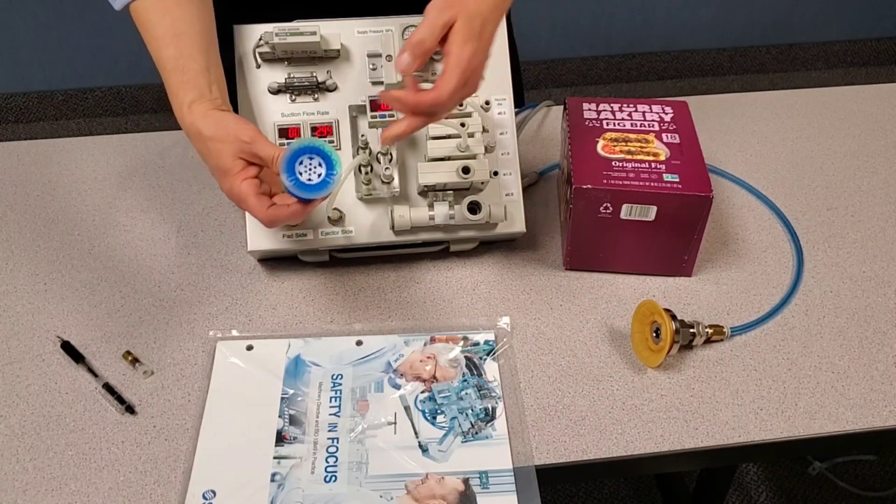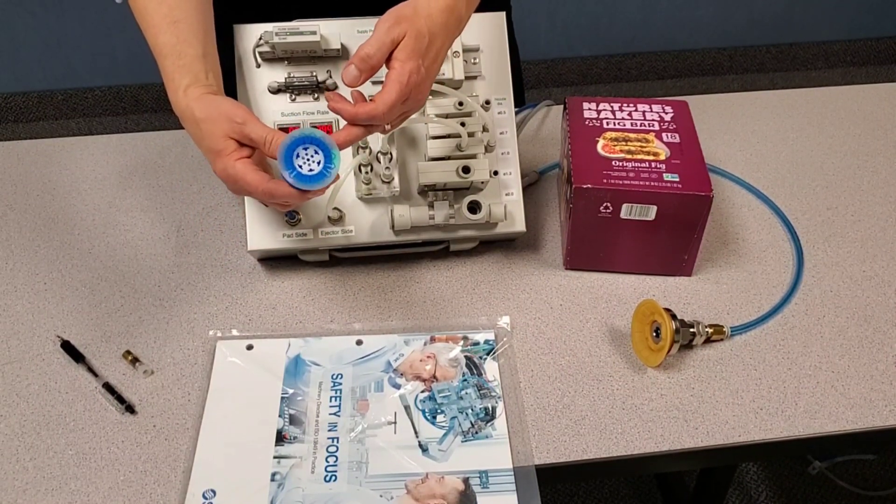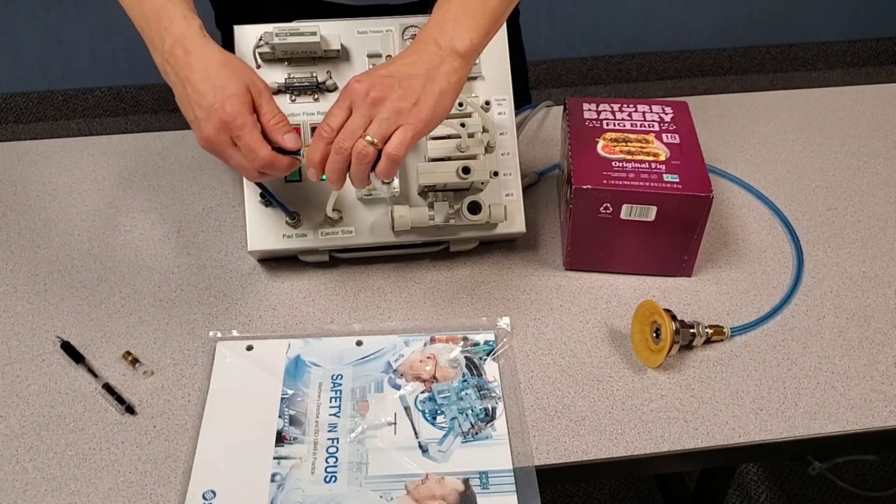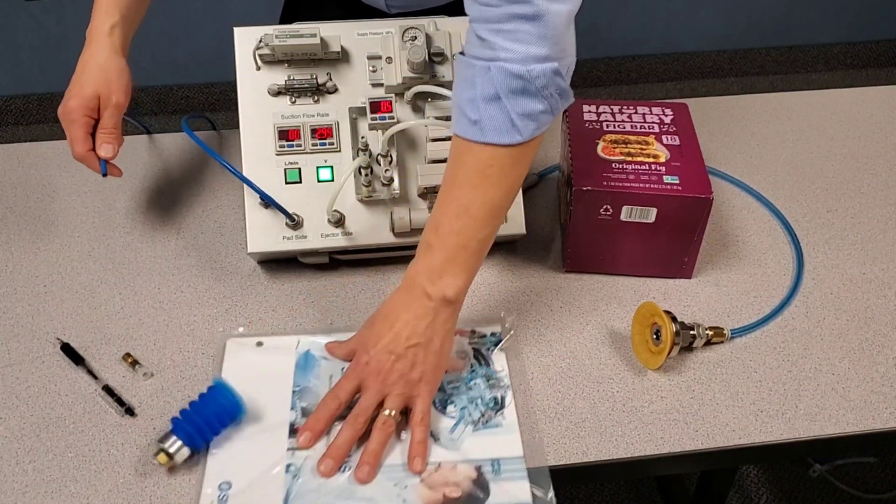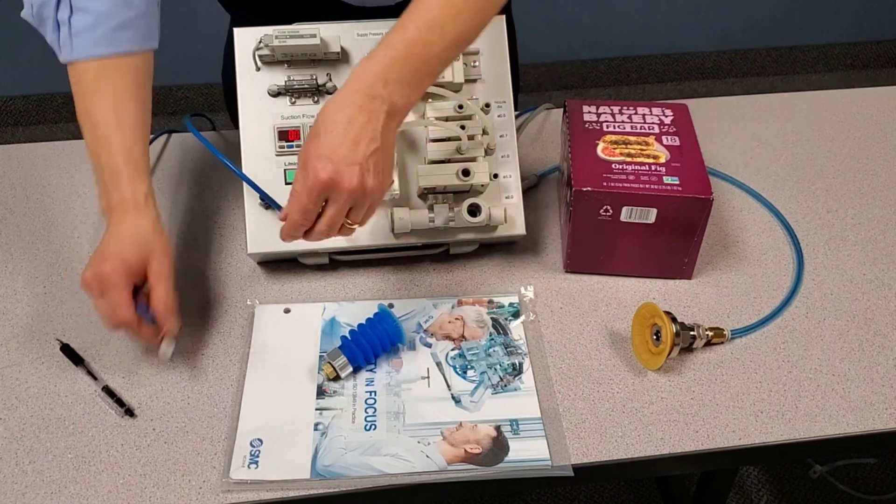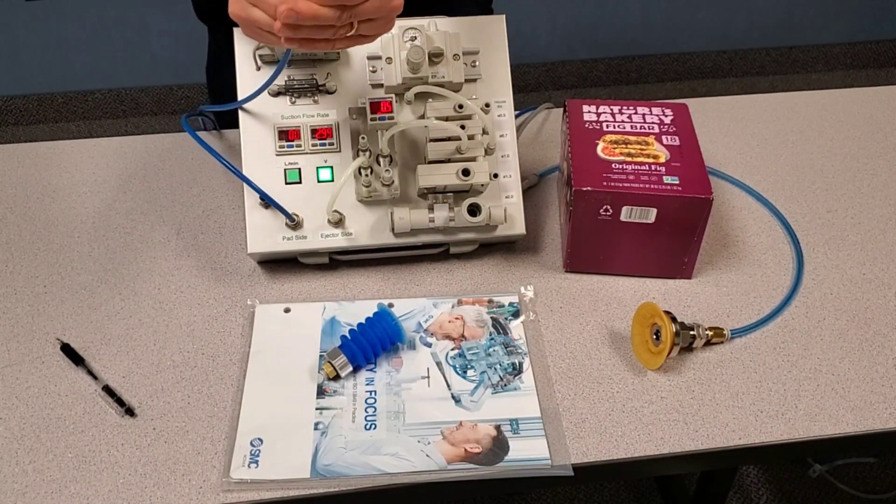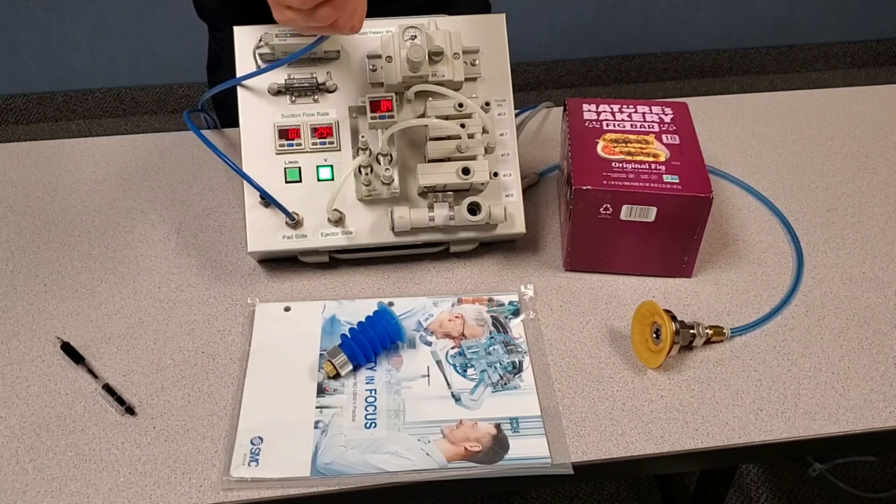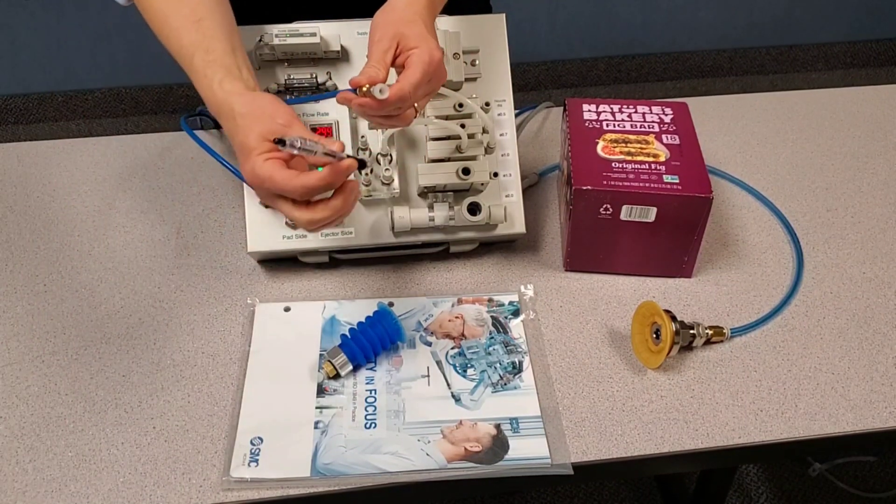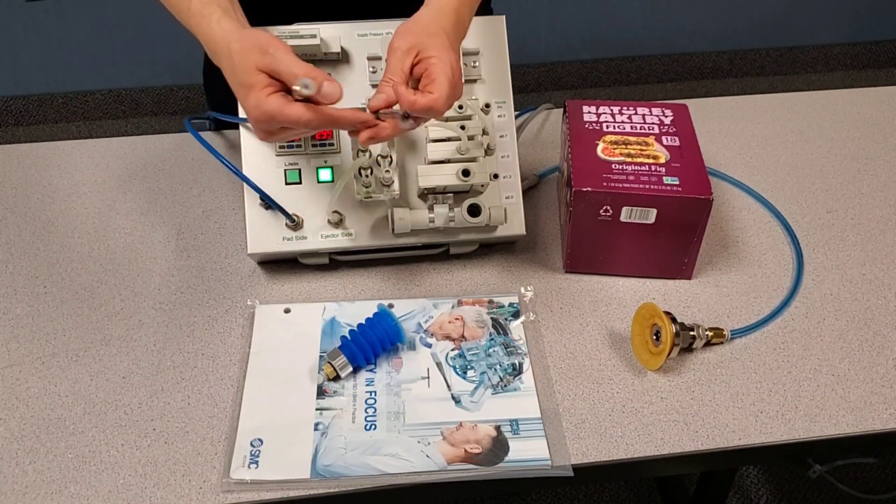This vacuum cup is a blue FDA silicone material, as it bellows. I'm going to disconnect. I'm going to connect to a silicone material, 10 millimeter cup. This is a 9.7 millimeter diameter pen.